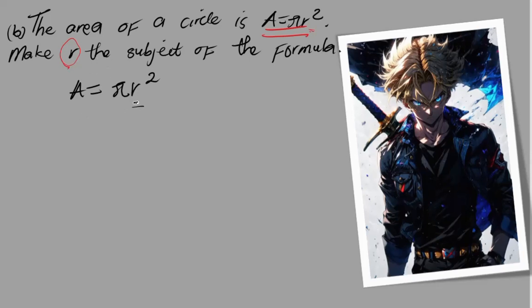I'm removing pi from this side. I'm left with r² = A/π. For me to remove this square, I'll have to square root this and also square root the other side. When I square root this other side I get a plus minus.